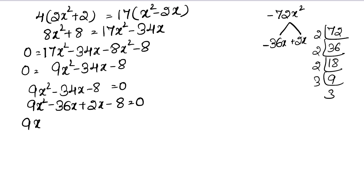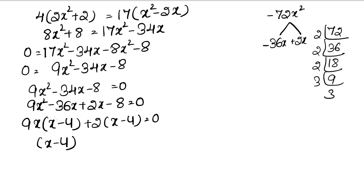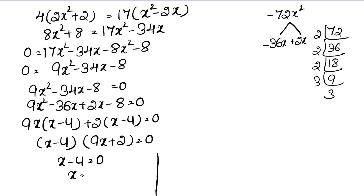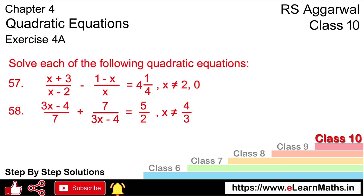Taking 9x common from first two terms gives 9x(x − 4), and taking 2 common from last two gives 2(x − 4). Since (x − 4) is common in both brackets, we get (x − 4)(9x + 2) = 0. Setting each factor to zero: x = 4, and from 9x + 2 = 0, x = −2/9. These are our answers.